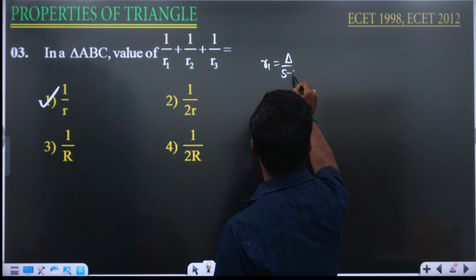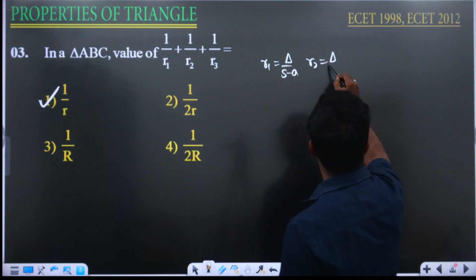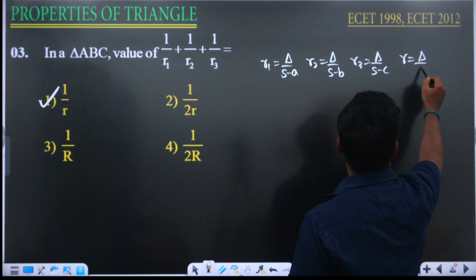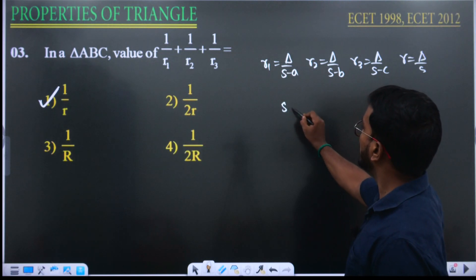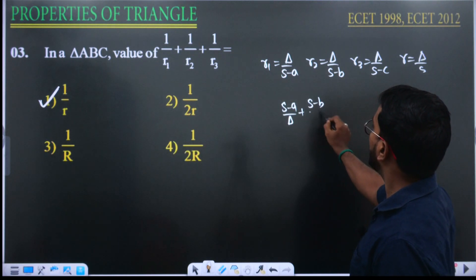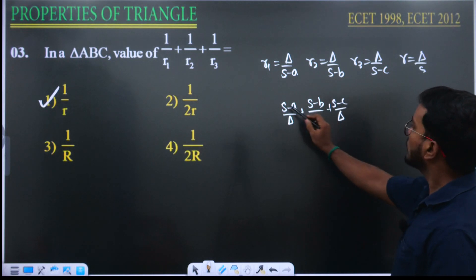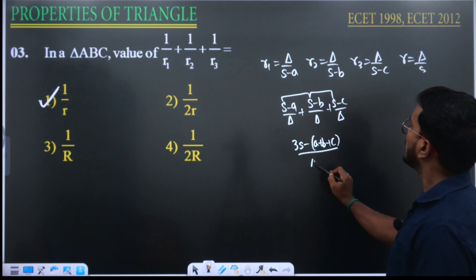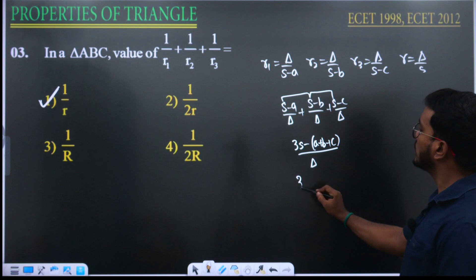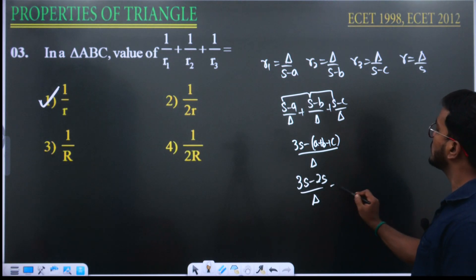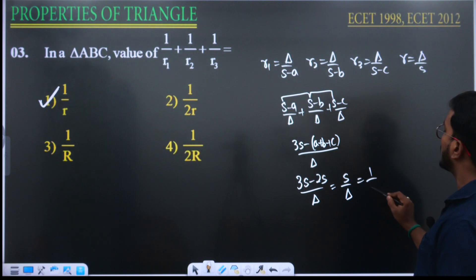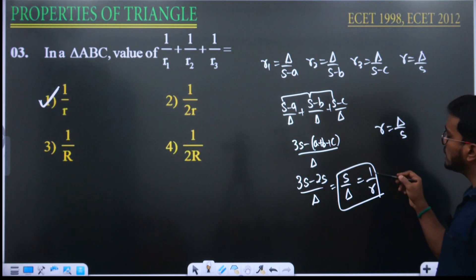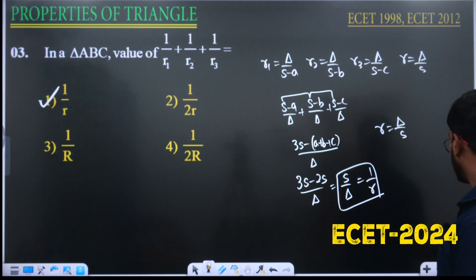Taking reciprocals: 1/r1 equals (s minus a)/delta, 1/r2 equals (s minus b)/delta, 1/r3 equals (s minus c)/delta. Adding them: (3s minus (a plus b plus c)) divided by delta. Since a plus b plus c equals 2s, this becomes (3s minus 2s)/delta equals s/delta equals 1/r, since r equals delta/s.